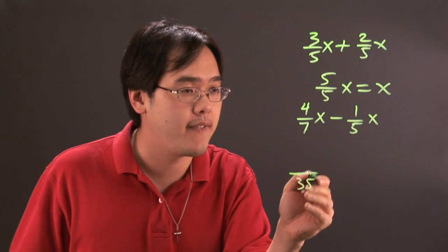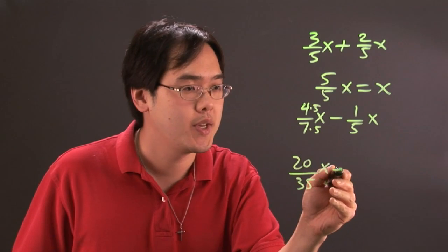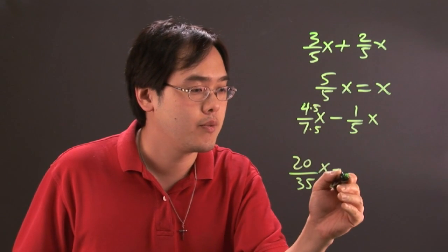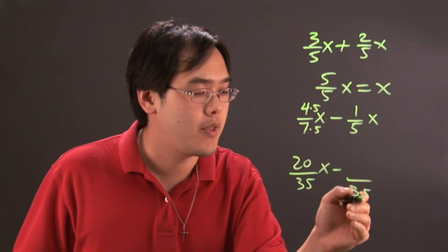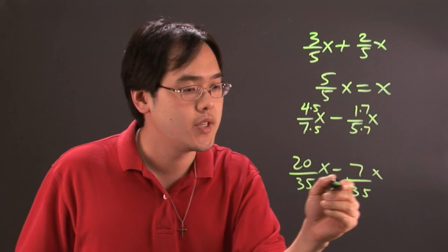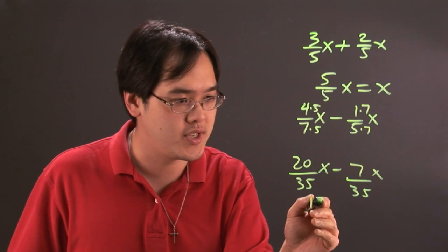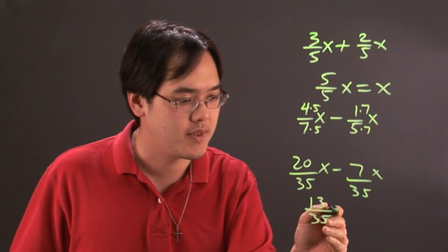7 goes into 35 five times, so you have 20/35x. 5 times 7 is 35, so you have to multiply the top and bottom by 7. So you have 20/35x - 7/35x, which is going to be 13/35x.